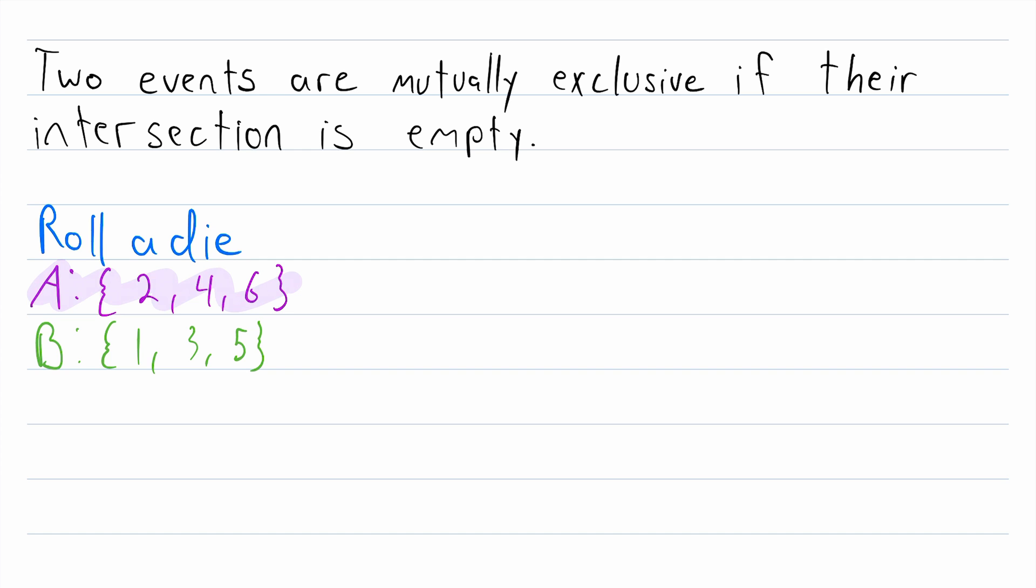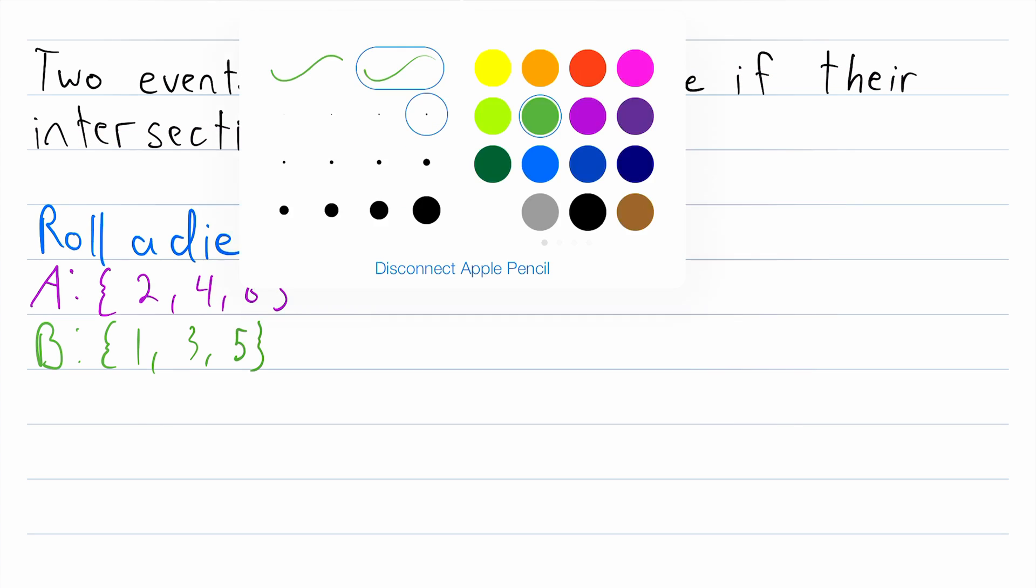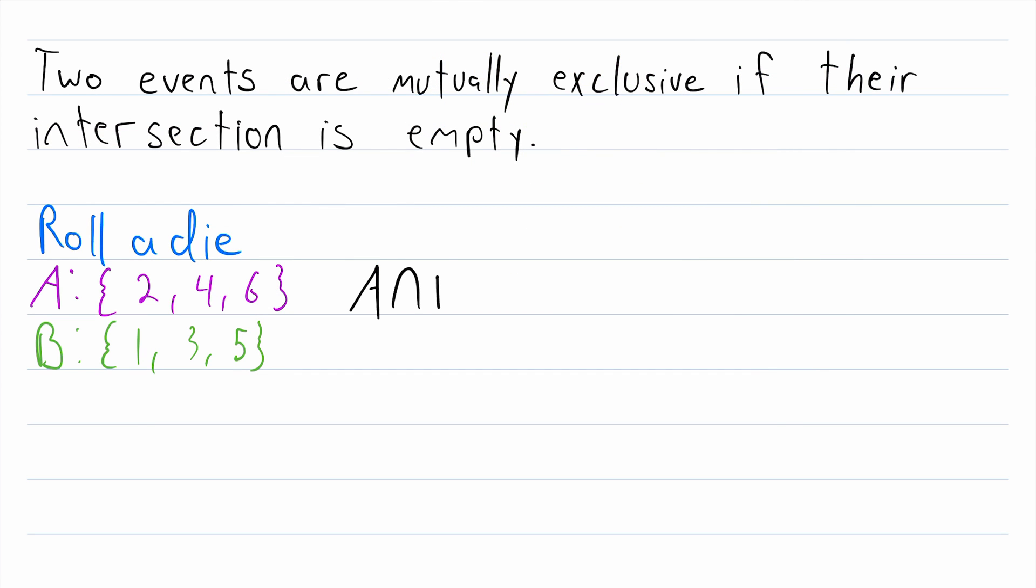Are these two events, A and B, mutually exclusive? Well, remember the definition. Two events are mutually exclusive if their intersection is empty. So what is the intersection of these two events, A intersect B? A intersect B is the set containing all elements that are common to both A and B. They have no common elements. So their intersection is the empty set.